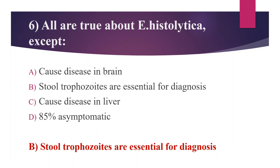Entamoeba histolytica causes extra-intestinal amoebiasis, seen in the liver and brain, so options A and C are correct. The majority of people infected with Entamoeba histolytica experience no symptoms — majority are asymptomatic — so option D is also correct.